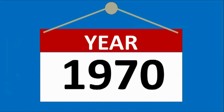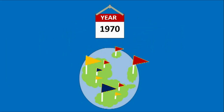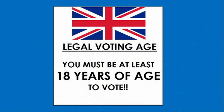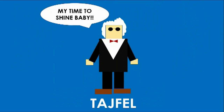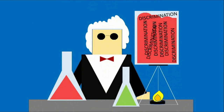It's the 1970s. Significant events take place around the world during this time. The Beatles would break up, the UK would lower its legal voting age to 18, and a psychologist by the name of Tajfel would conduct investigations to help us understand why discrimination takes place. These are his experiments.